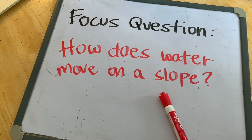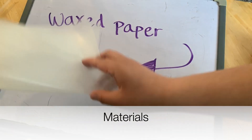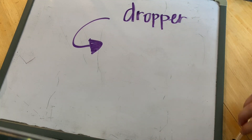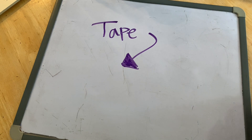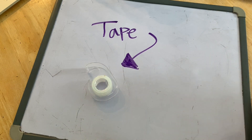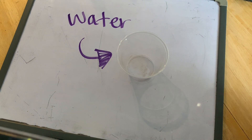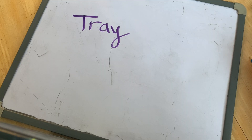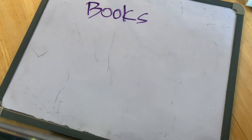The materials needed for our investigation today are waxed paper, a dropper, tape, water, and a flat surface like a tray — you could also use a baking tray as well — and two books.